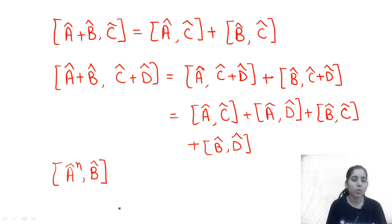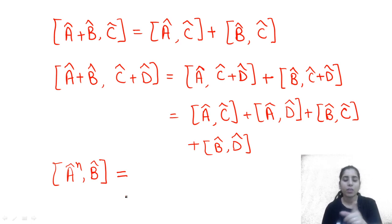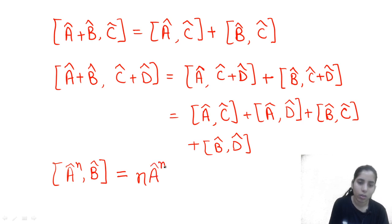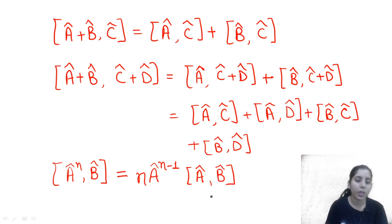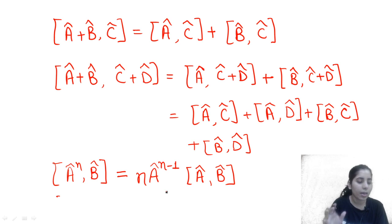Generally there is a condition corresponding to the next formula, but most of the time we can apply it directly. If you follow reference books like Griffiths or Ghatak, you may also find a supporting condition - that is, the commutator bracket of A with [A,B] having a particular value. But normally we can apply it in most cases. So instead of solving [A^n, B] fully, we can directly write n*A^(n-1) times the commutator bracket of A with B - it gives the answer easily. Similarly [A, B^n] follows the same approach.